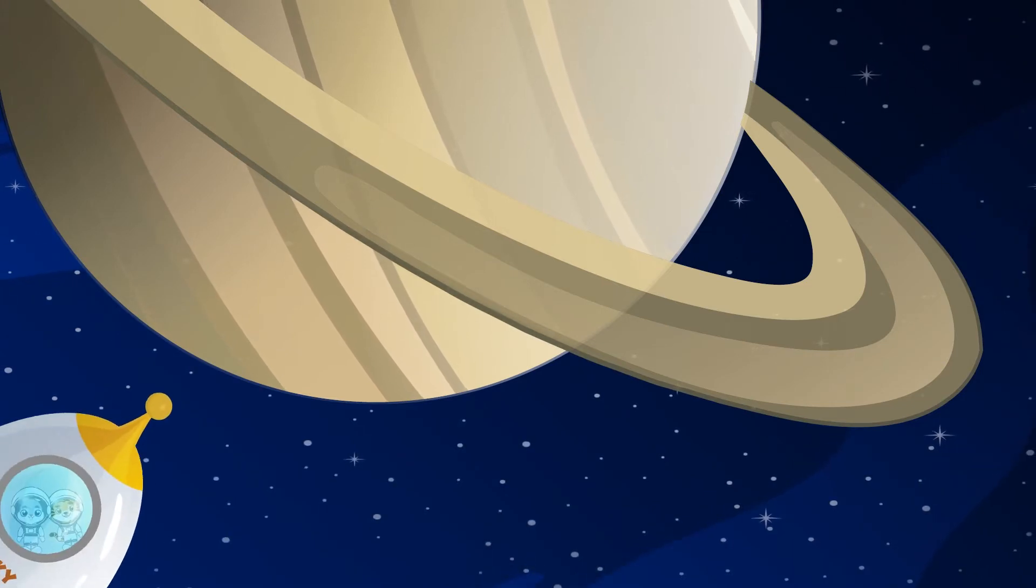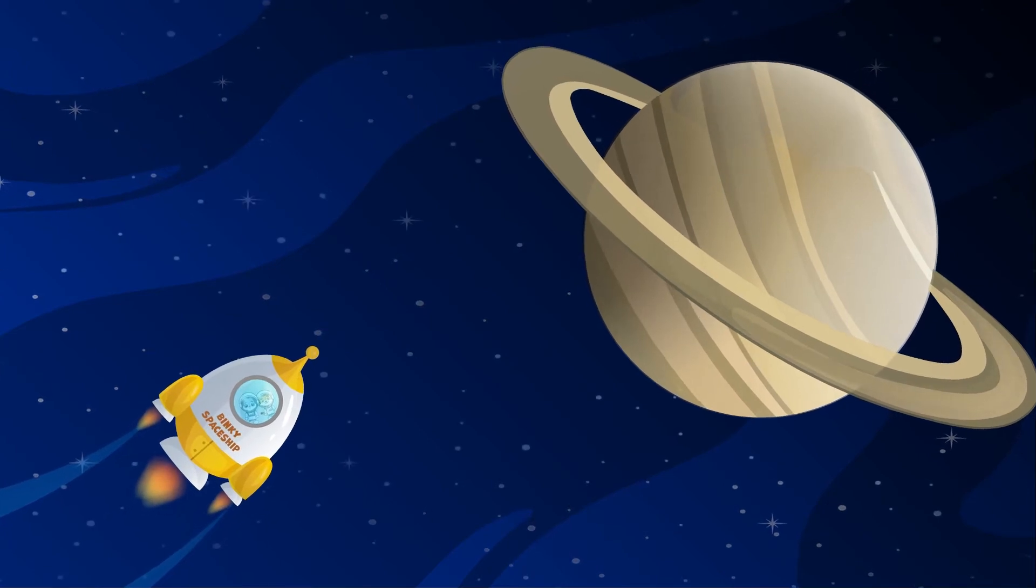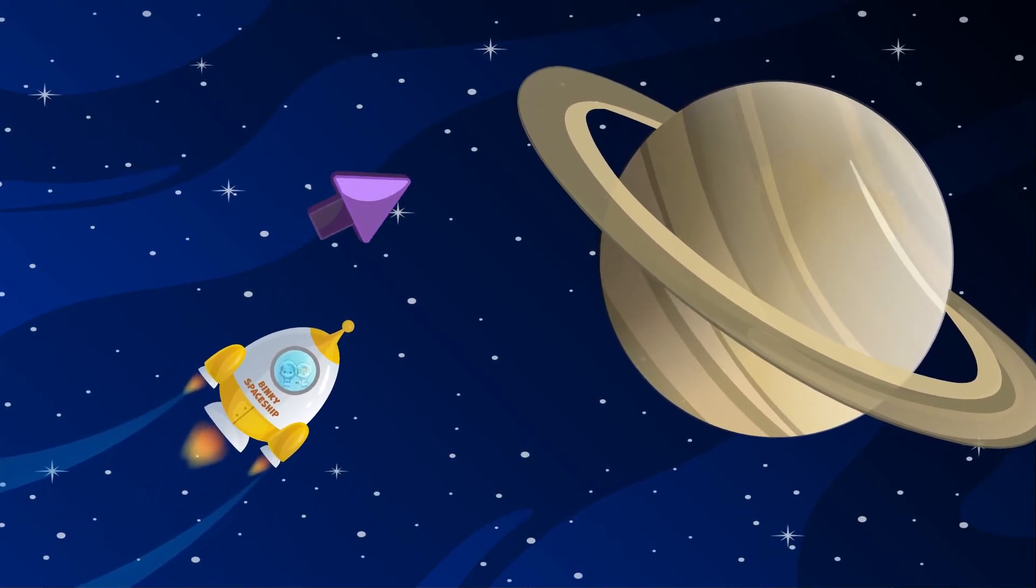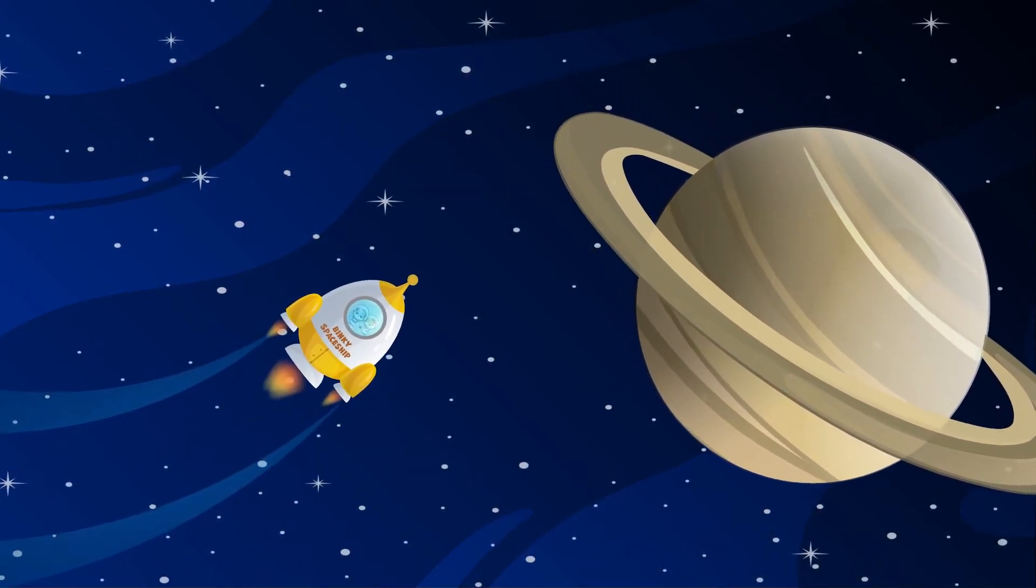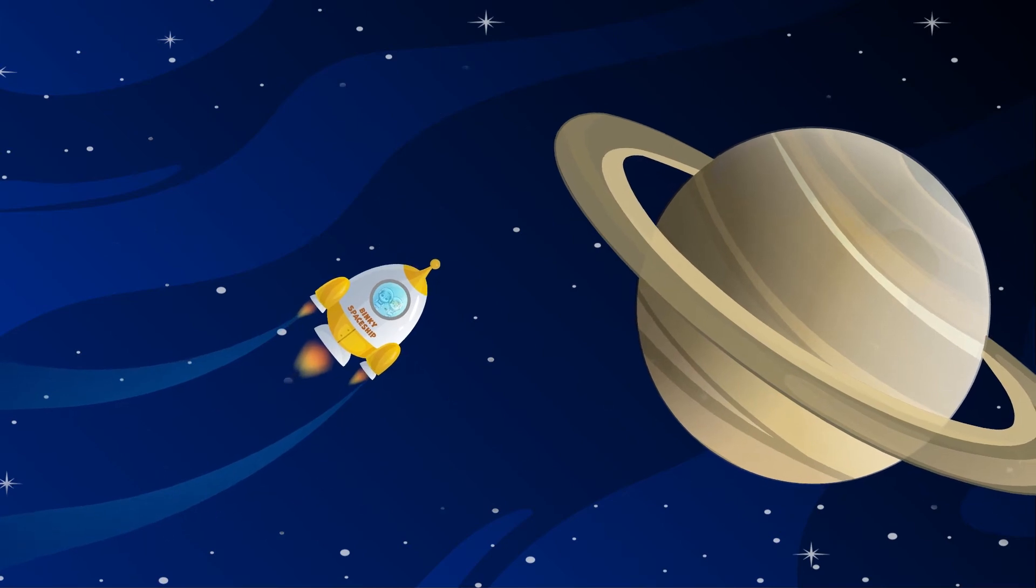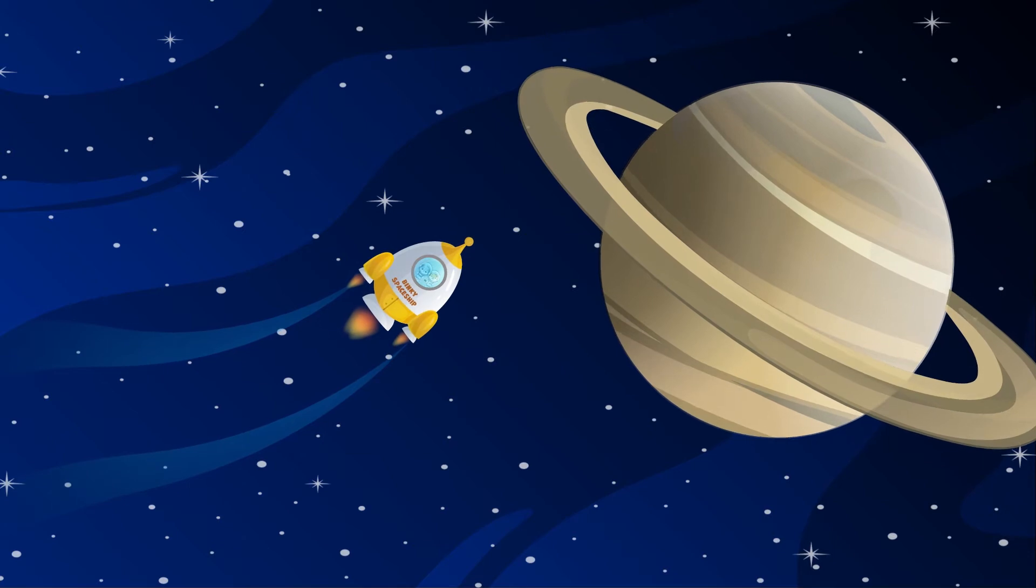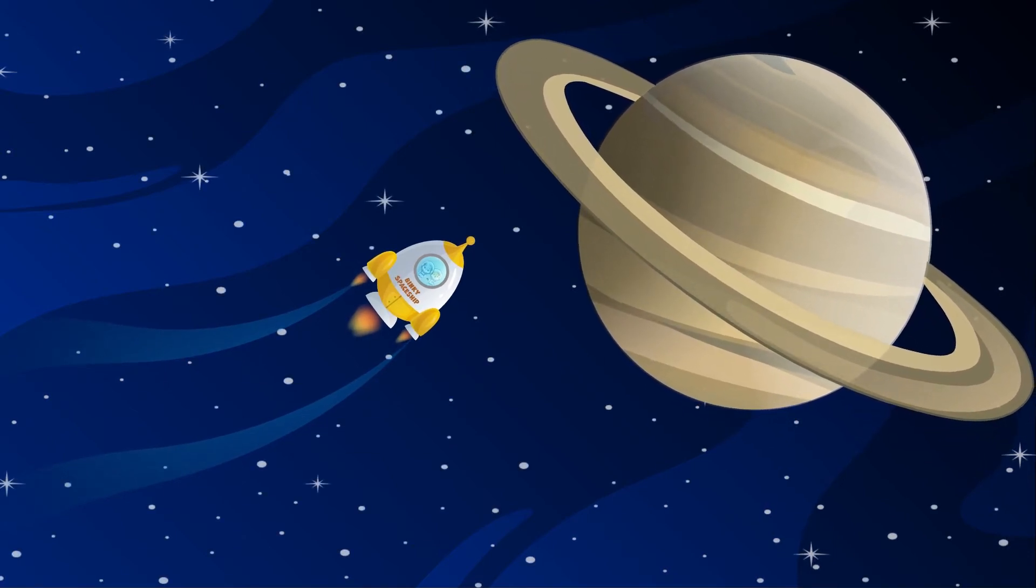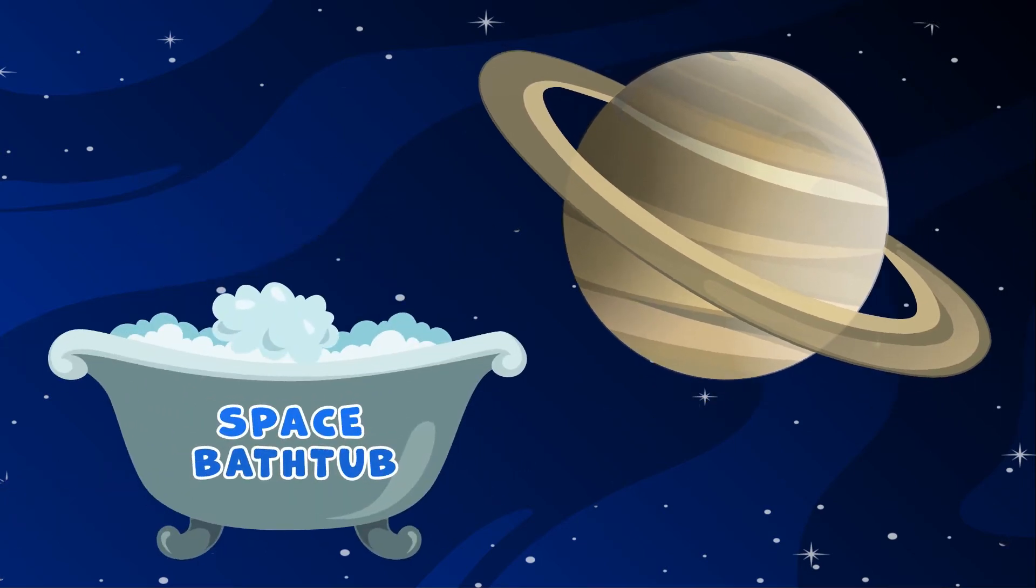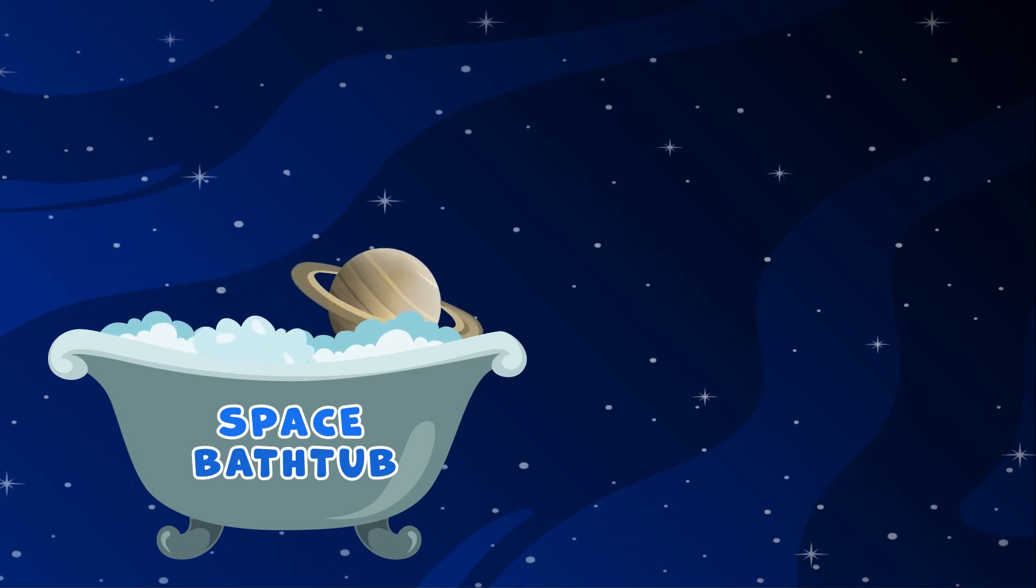The sixth planet from the Sun, and second largest after Jupiter, is Saturn. Saturn can easily be recognized by its rings, which are believed to be pieces of comets, asteroids, or destroyed moons that broke up before they reached Saturn and were torn apart by Saturn's powerful gravity. Saturn is the least dense planet of the solar system, and is the only one less dense than water. If there were a bathtub big enough to hold it, Saturn would float in it.